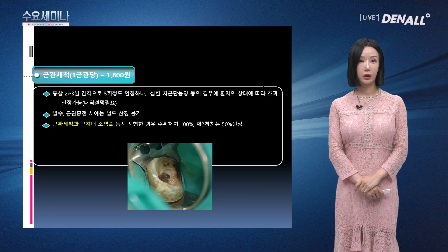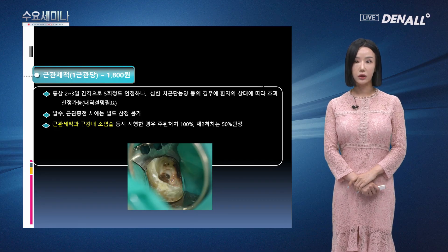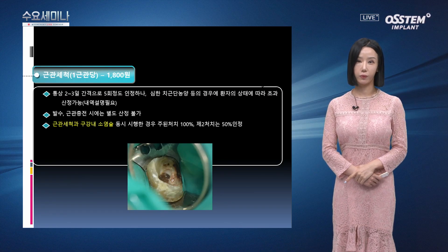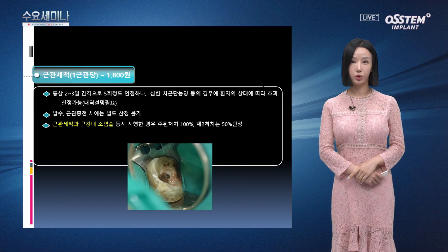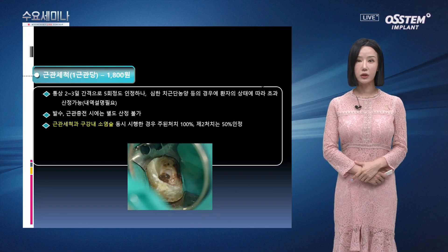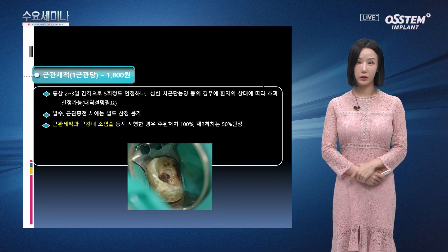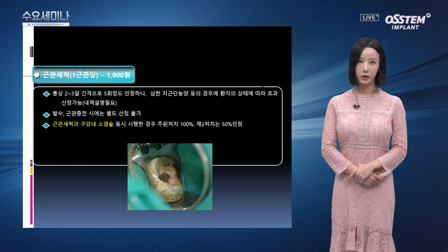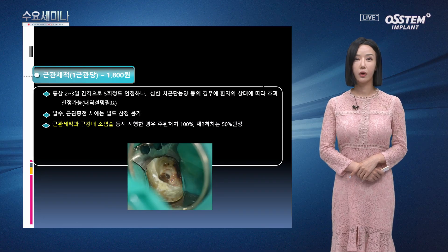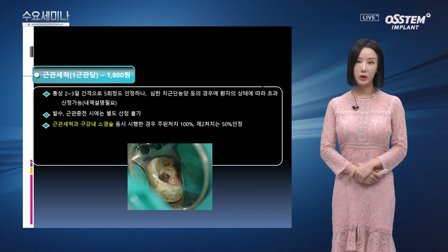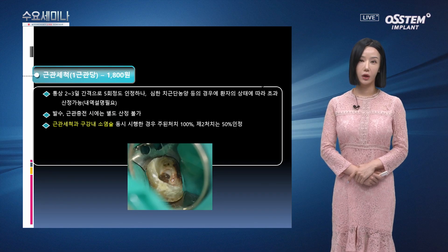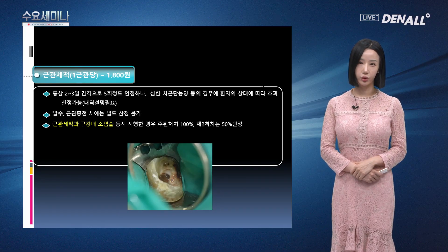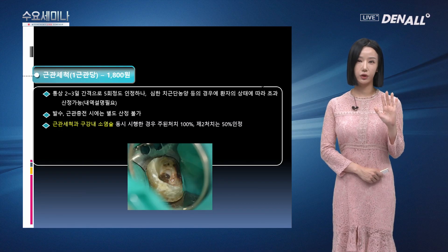다음으로 근관 세척입니다. 근관 세척은 역시 1근관당으로 책정되고 수가는 1,800원입니다. 통상 2~3일 간격으로 5회 정도까지 인정하지만, 심한 치근단 농양 등 환자의 증상에 따라 초과하여 산정 가능합니다. 내역 설명에 쓰면 됩니다. 발수, 근관 충전 시에는 별도 산정이 불가합니다. 근관 세척과 구강 내 소염수를 동시에 시행했을 때 주된 처치는 100%, 제2처치는 50%만 인정됩니다.